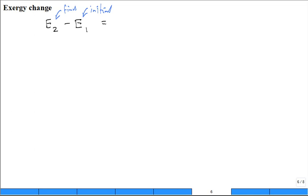So you could do it this way. What is the initial or the final exergy? That would be u2 minus u0 plus p0 v2 minus v0 minus t0 s2 minus s0. Then subtract the initial exergy,